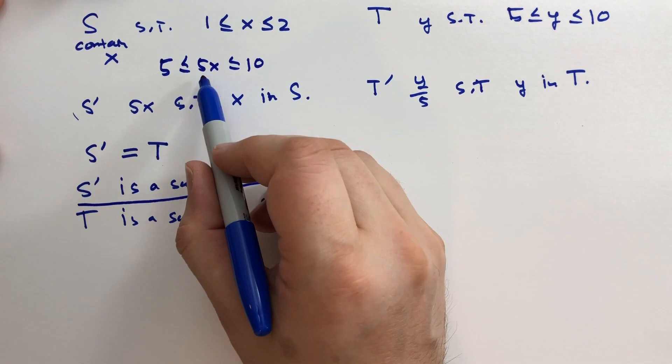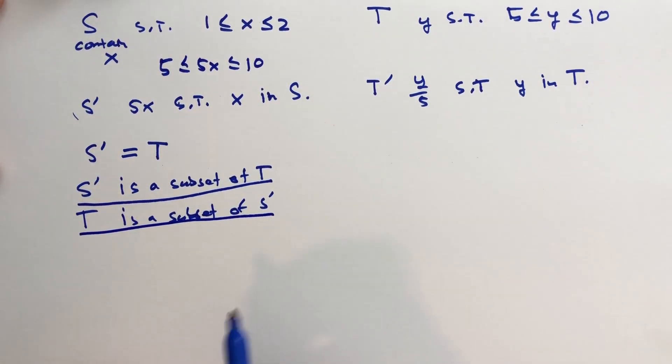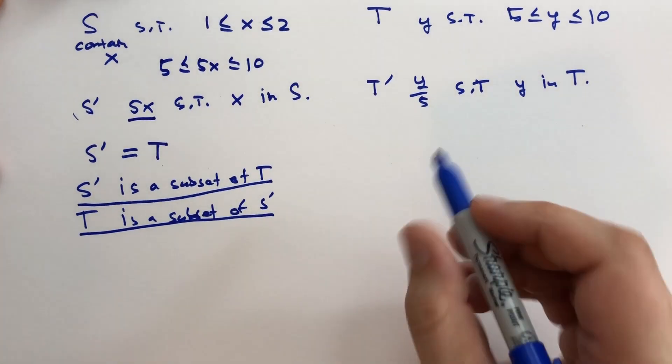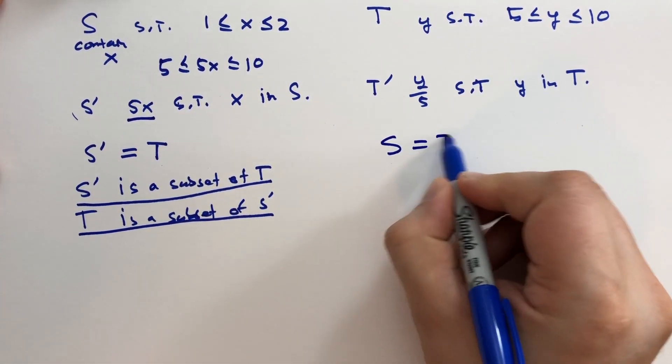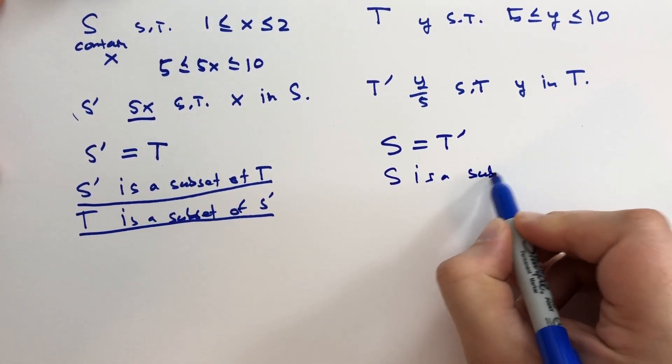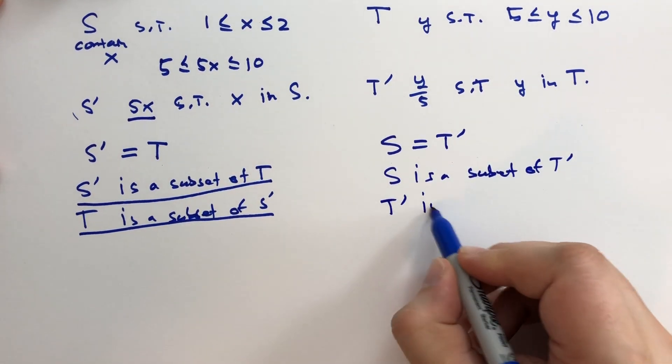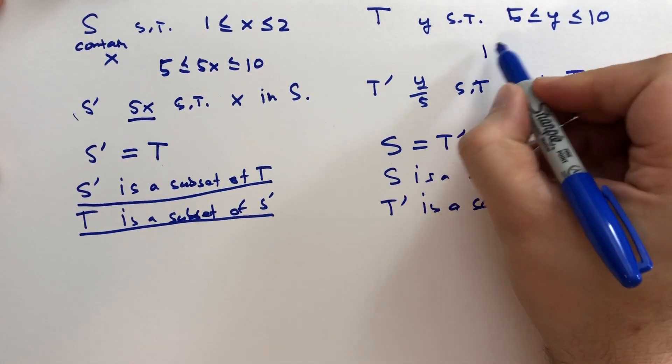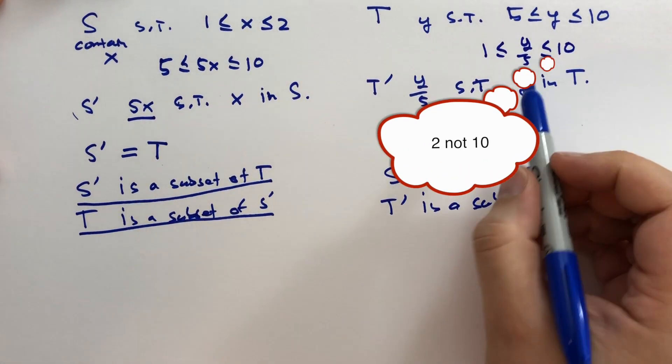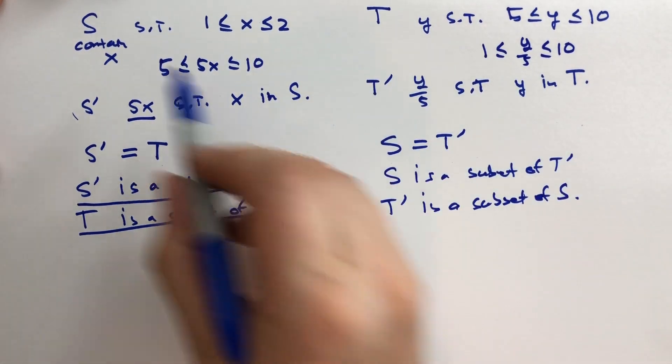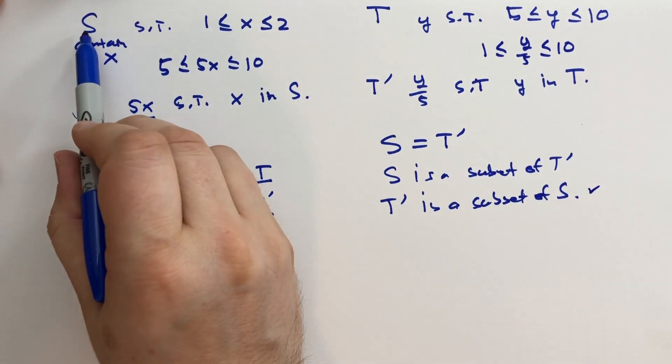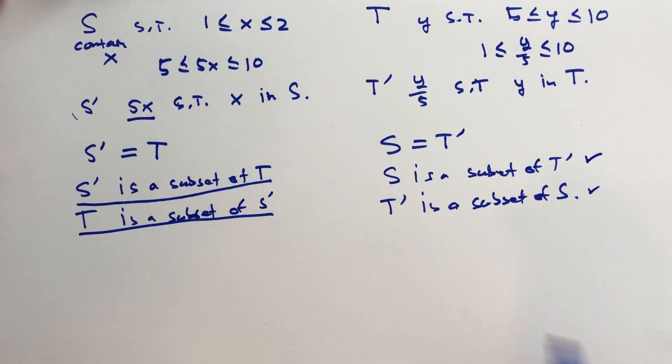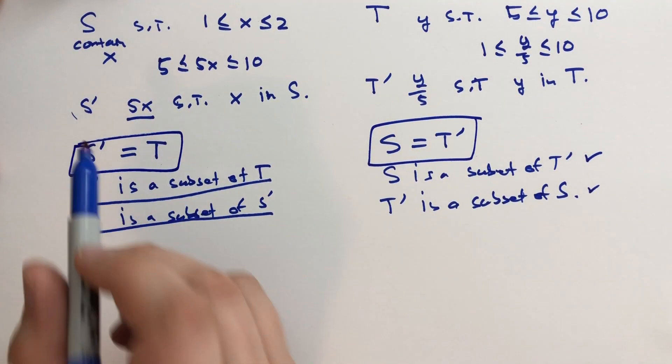And when we start with T, we can substitute in 5X for Y, and we see that that is indeed also a subset of S prime. So we prove this by showing that 5X is a substitute for Y with the same conditions. Over here, if we want to prove that S is equal to T prime, we have to do the same thing. S is a subset of T prime, and we have to show that T prime is a subset of S. So in order to do that, we note that if we take Y over 5, we get 1 is less than or equal to Y over 5 is less than or equal to 10. And indeed, Y over 5 could stand in for X. So we know that T prime is the same set of numbers as S. So that's there. And also, we can start here and go this direction. We take X, replace it with Y over 5, and we see that S is a subset of T prime. And so this proves, this is how you prove that two sets are equivalent.